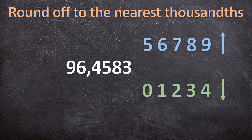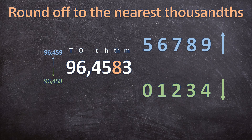For this question we need to round off 96,4583 to the nearest thousandths. We look at the place values — we're either going to round up to 96,459 or round down to 96,458. To determine which, we look at the digit to the right in the ten-thousandths place value, which is a 3. Since 3 is smaller than 5, it rounds 96,4583 down to 96,458. So we write the curvy equal sign and the answer: 96,458.